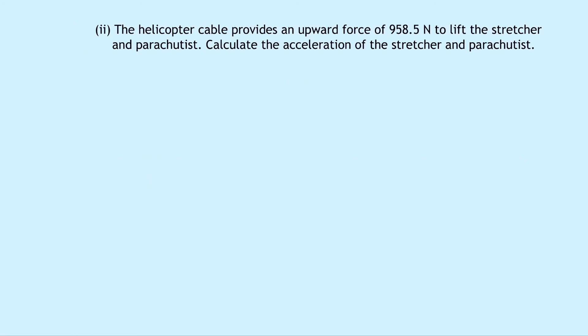Lastly, part two says that the helicopter cable provides an upward force of 958.5 newtons to lift the stretcher and parachutist. Calculate the acceleration of the stretcher and parachutist. Well, we're given an upward force in this question, and we've just calculated the combined weight downwards. So we firstly have to work out what the unbalanced force is going to be, and then we can use Newton's second law to work out what the acceleration is going to be.